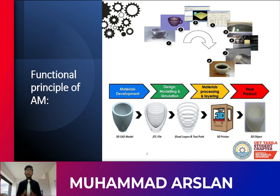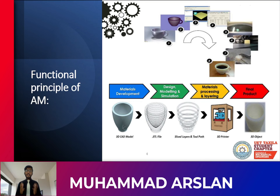After converting the CAD model into an .STL file, it is put into a slicer, which is a software. What the slicer does is divide your CAD model into layers and represent a path for the tool — showing how it is going to create the layers from the raw material. After slicing and providing the path, it is put into the 3D printer, and the rest of the work is done by the 3D printer and the final product is obtained. This is the basic example of additive manufacturing: material development, design modeling and simulation, material processing and layering, and then the final product is obtained.